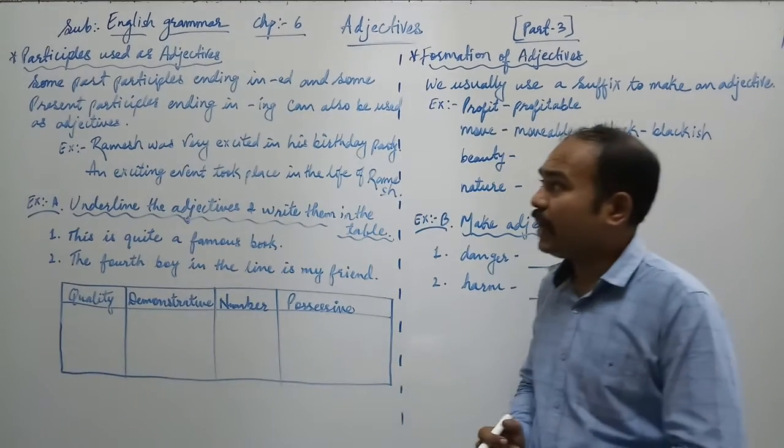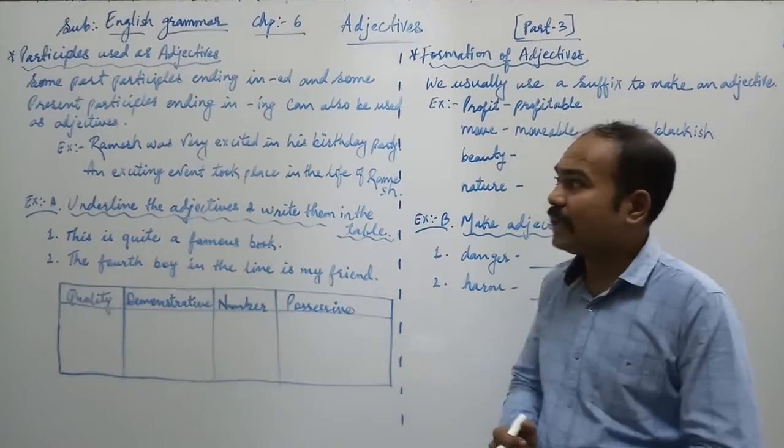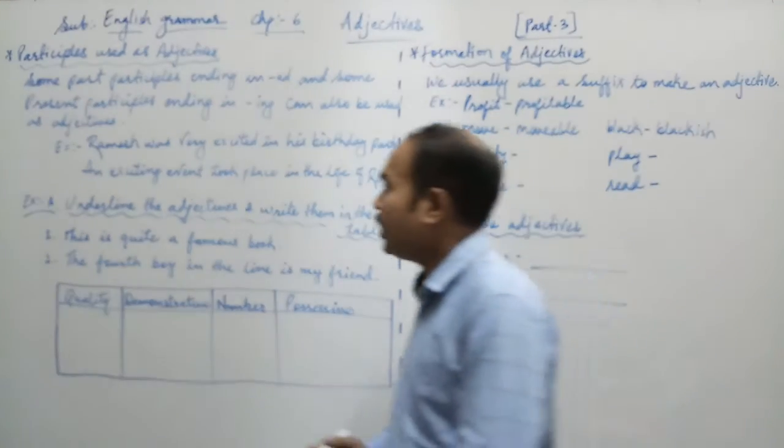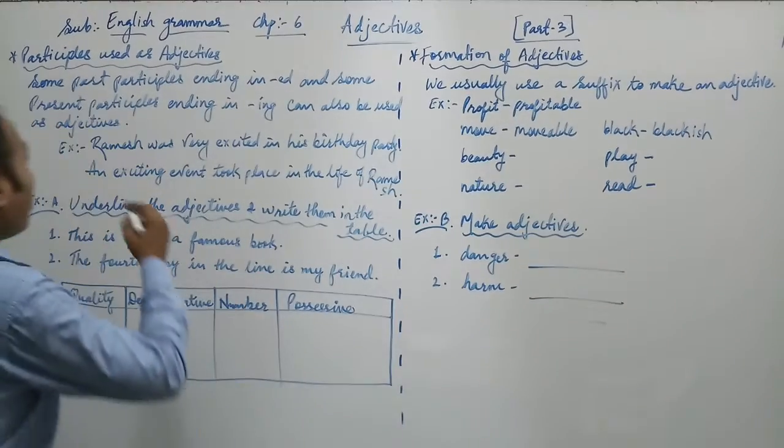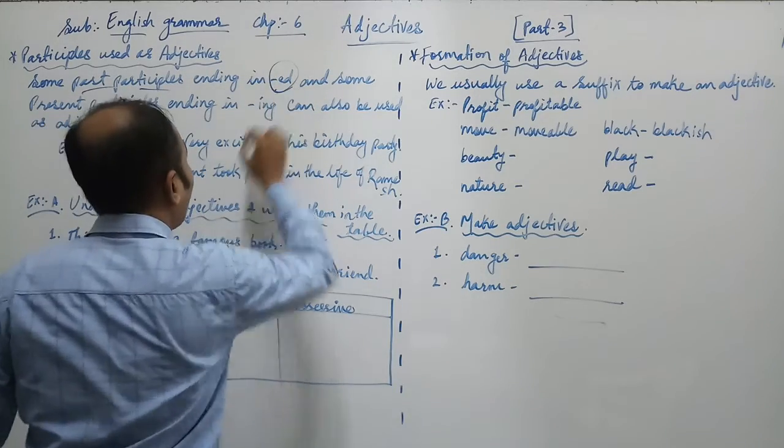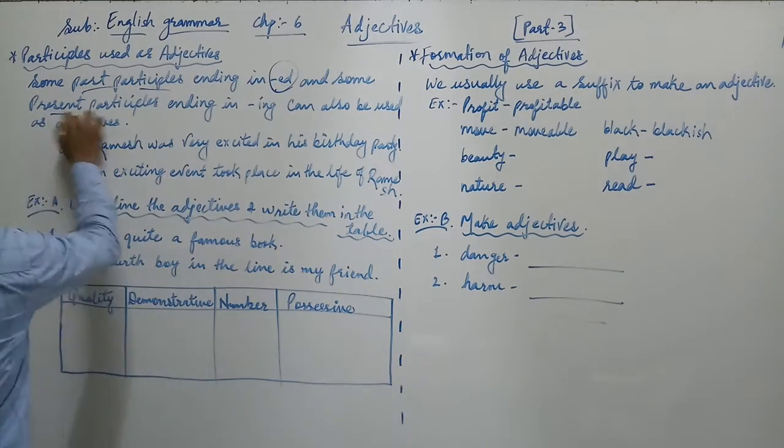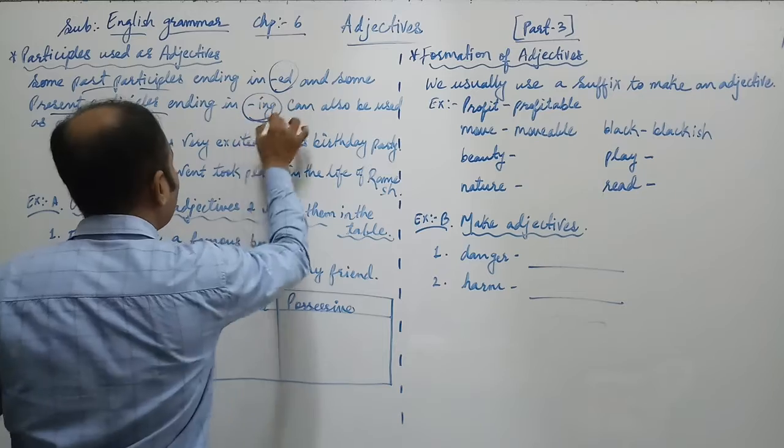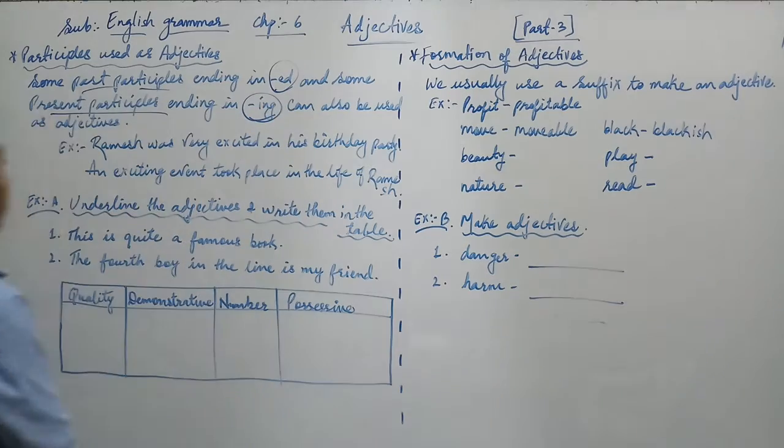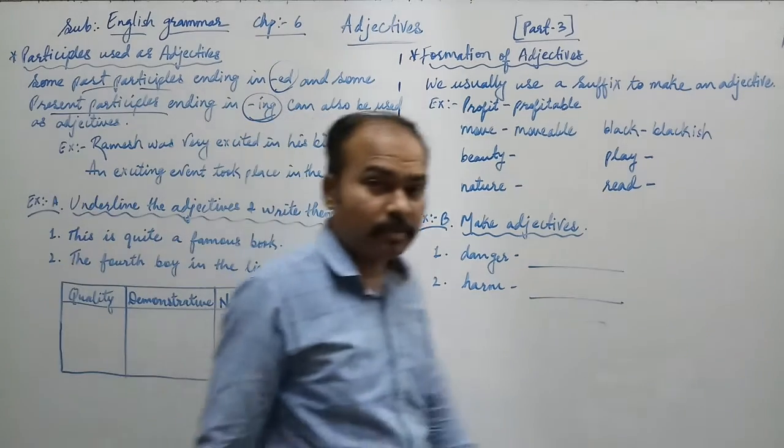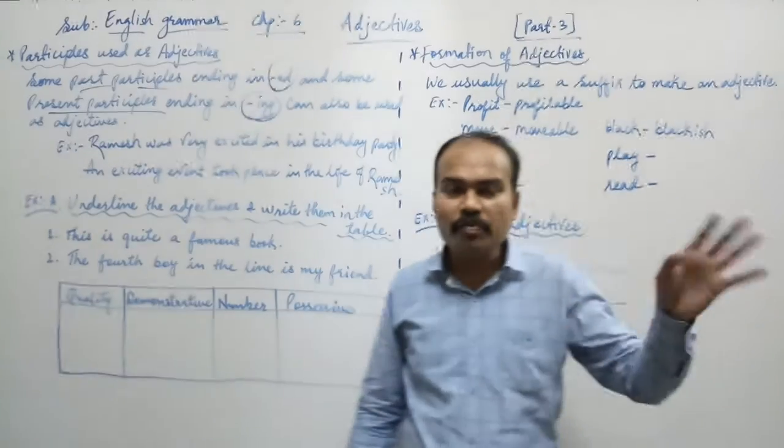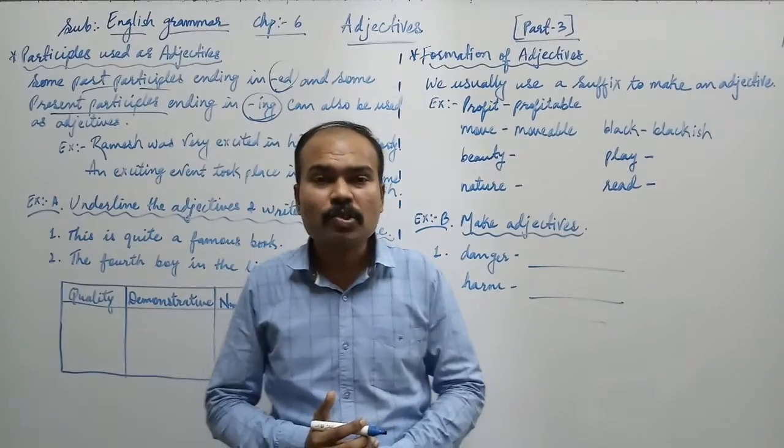Let us study now the participles used as adjectives. Some past participles ending in ED form and some present participles ending in ING form can also be used as adjectives. Students, V1, V2, V3 or V4 verb we have seen. So V3 which we have seen, past participles.